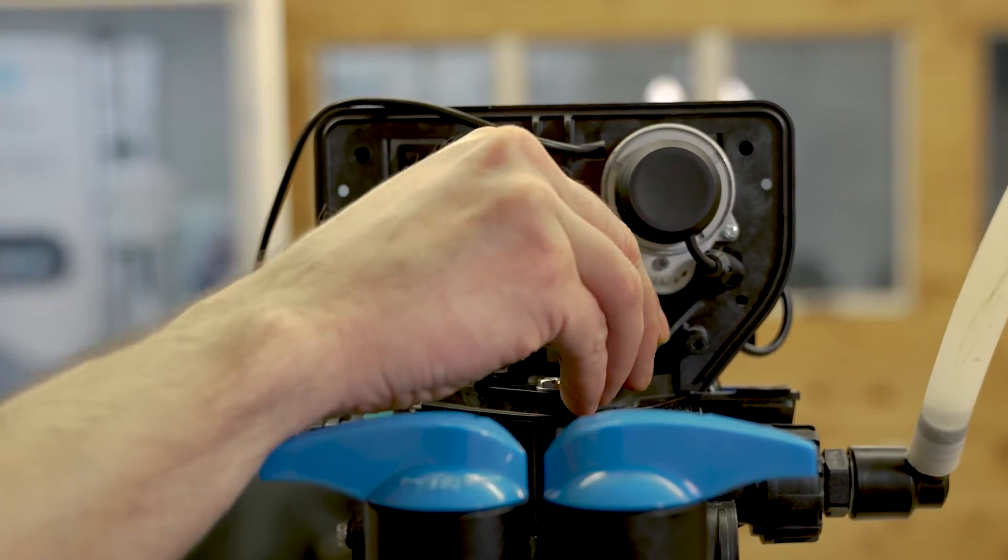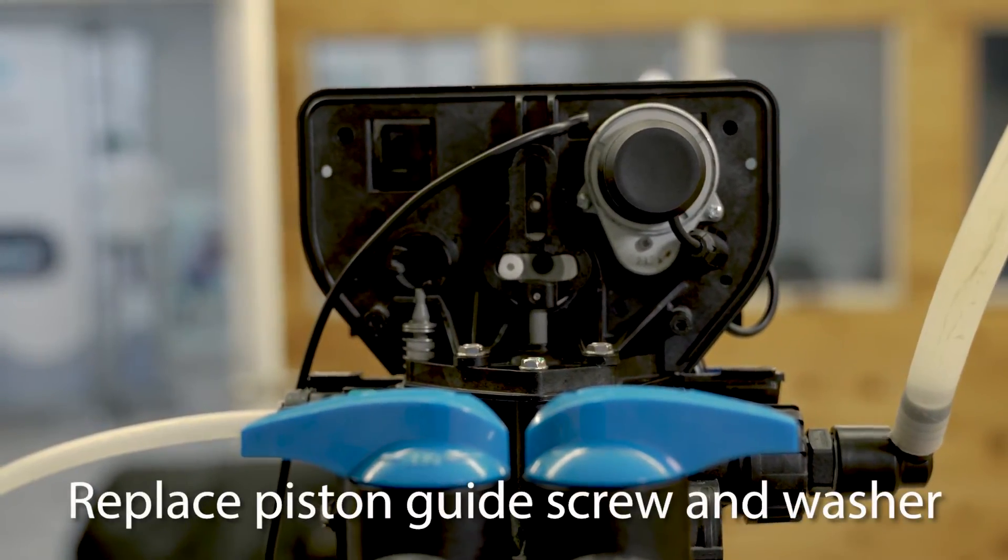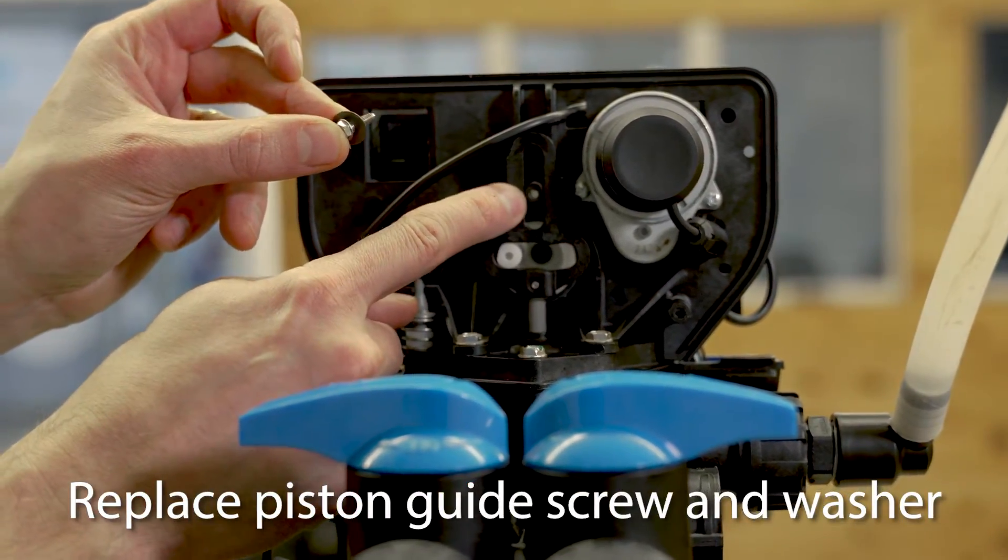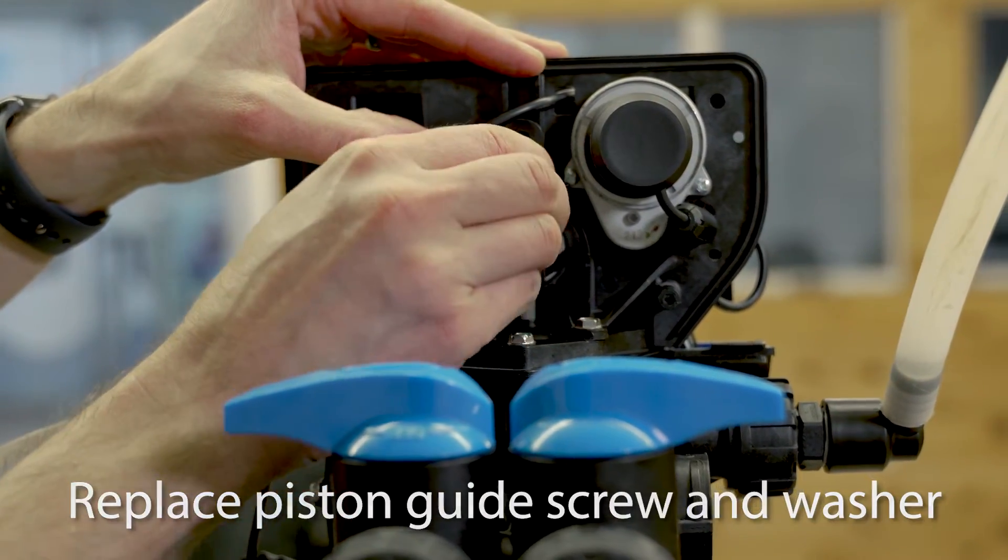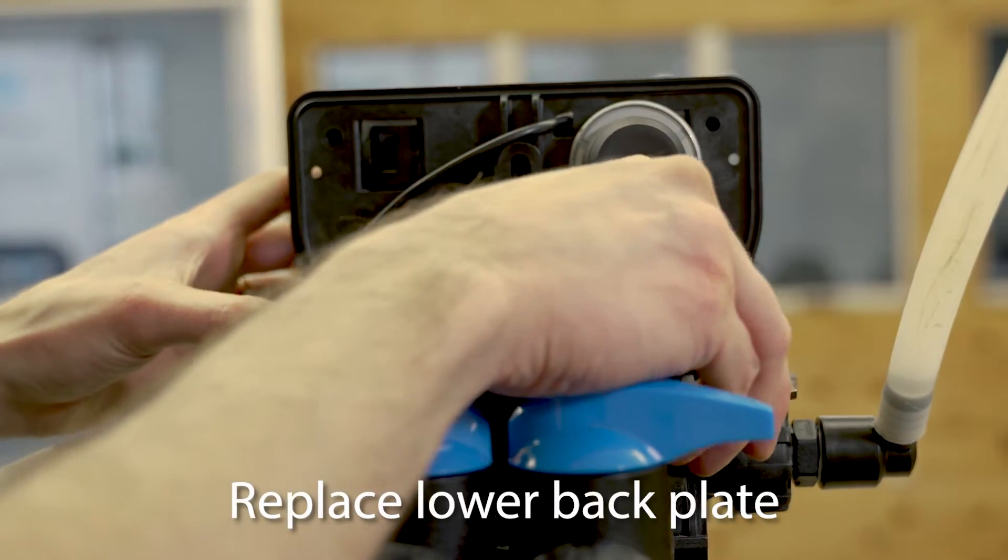We can then replace the power head screws. Next, replace the piston guide screw and washer that go right here. Next we're going to replace the lower back plate.